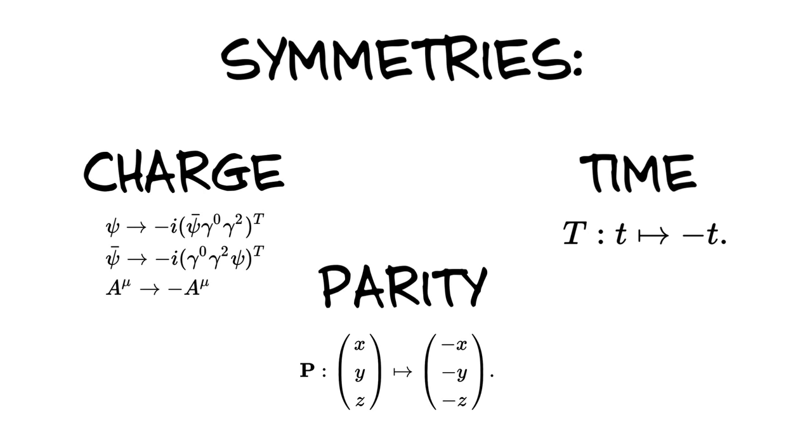In particle physics, there are three major symmetries that we're always expected to hold: charge, parity, and time. Time symmetry, as we've already discussed, means interactions work the same way forwards or backwards in time.